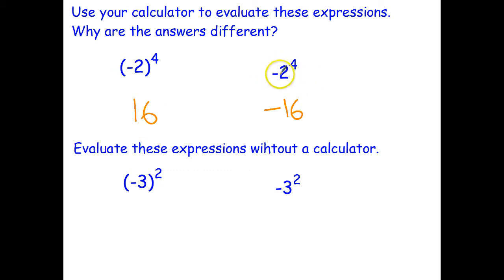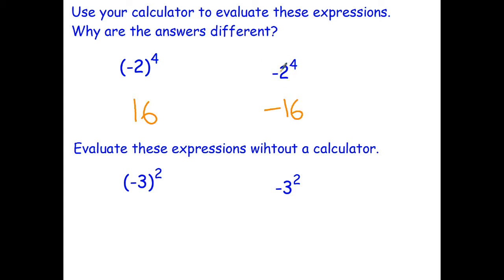This question without brackets is basically saying — order of operations says raise 2 to the power of 4, which gives us 16, and then take the negative of your answer. In a way, it's like multiplying by negative 1. So this is basically saying: raise to the power first, and then take the negative. That's why we get negative 16.